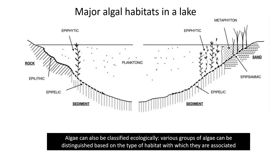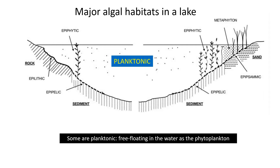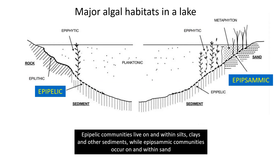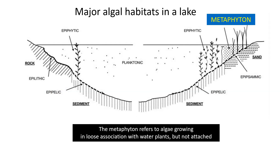Algae can also be classified ecologically. Various groups of algae can be distinguished based on the type of habitat with which they are associated. Some are planktonic, free-floating in the water as the phytoplankton. Others are attached — epilithic, attached to rock, and epiphytic, attached to plants. Epipallic communities live on and within clays and other sediments, while epipsammic communities occur on and within sand. The metaphyton refers to algae growing in loose association with water plants, but not attached.